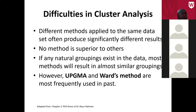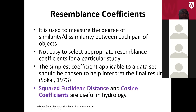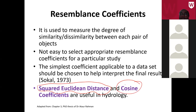One problem with cluster analysis is that there are many different methods. If your data has no proper grouping structure, different methods will produce different groupings — the result is sensitive to the method chosen. But if your data has a clear structure, most methods will give very similar groupings. For measuring distances between members, the squared Euclidean distance and the cosine coefficient are widely used. Squared Euclidean distance is computed from coordinates of two points; the cosine coefficient gives the angle between two vectors from the origin.